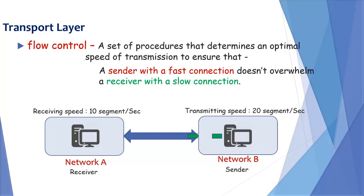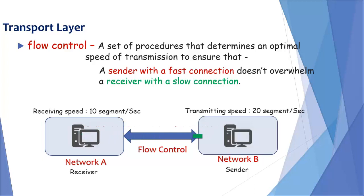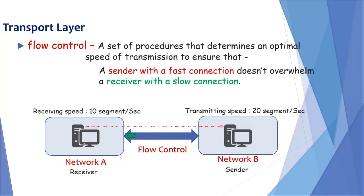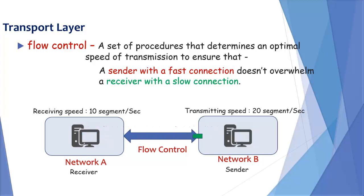When flow control is applied, network A sends a signal to network B when to send the data. In this way, network A and network B are synchronized and data loss is eliminated. This is the role of flow control.